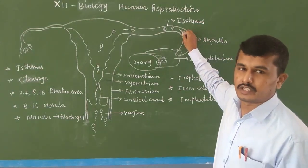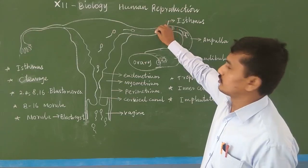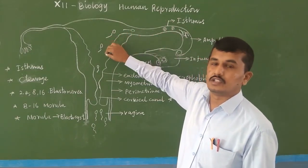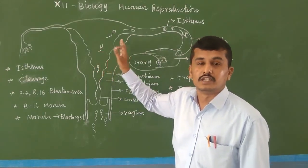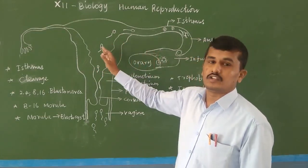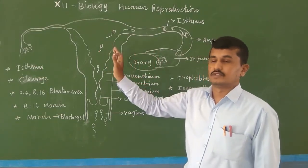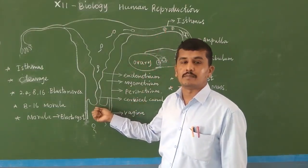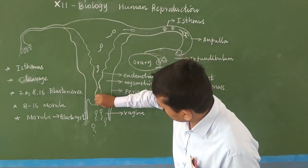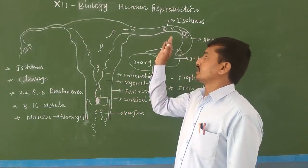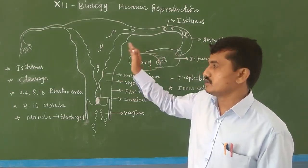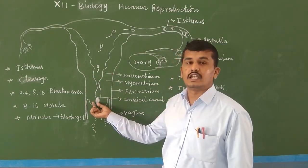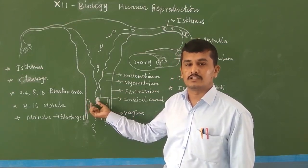The embryo in the ampullary-isthmic region slowly divides into 2, 4, 16, 32 cells through mitotic division and slowly enters into the uterine cavity. During pregnancy the child, known as a fetus, develops in the uterus. After fertilization, the cervical canal area is filled with some mucus, blocking the cervical area.